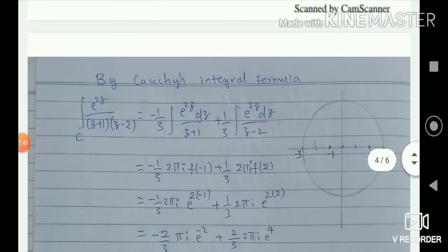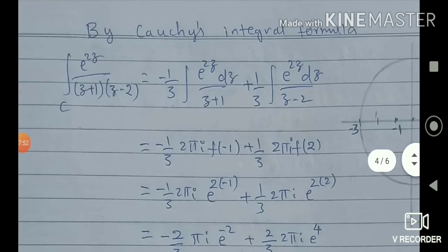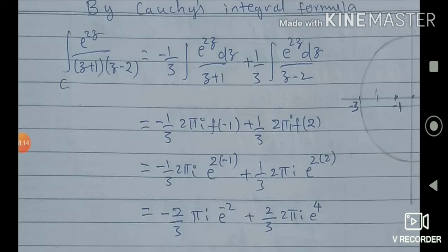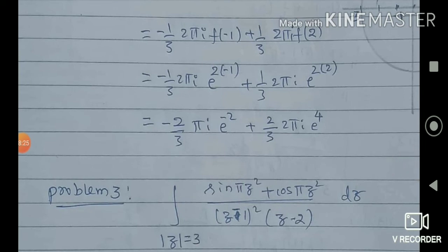Since both points lie inside, we apply Cauchy's Integral Formula for both integrals. In the first case: minus 1 by 3 times 2πi times f(−1), where f(z) = e^(2z), so f(−1) = e^(−2). In the second case, a is 2, so f(2) = e^(2·2) = e^4. The final answer is minus 2 by 3 times πi times e^(−2) plus 2 by 3 times 2πi times e^4.